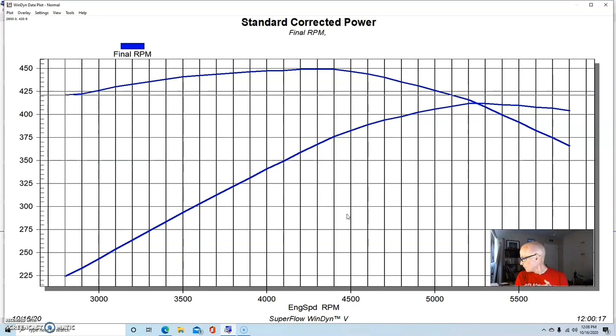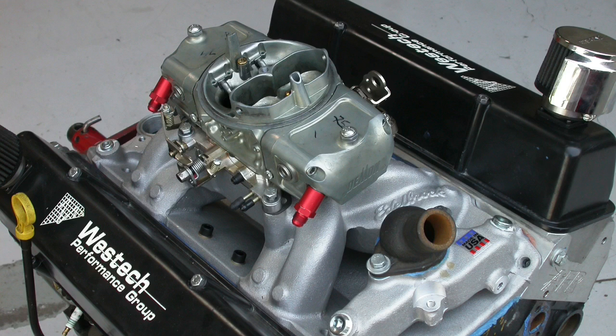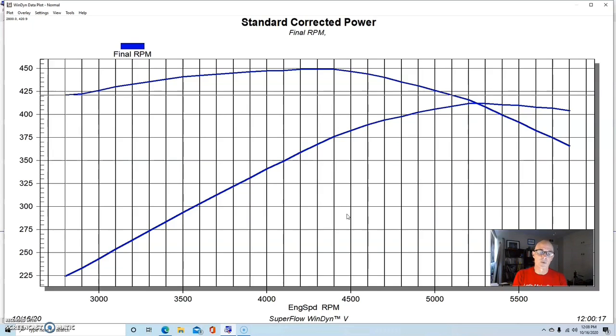This combination also, as I said, had the Airflow Research 195 heads on it. We started out with a Performer RPM intake manifold, and in this case it had a 650 Speed Demon carburetor. We had 1 3/4-inch headers and an MSD distributor.